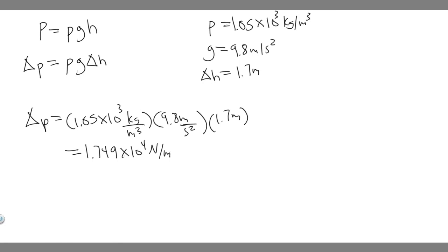But keep in mind what they want us to find it in. They want it in millimeters of mercury. So we have to convert this. And so there's a unit conversion you can use, which essentially 1 mm of mercury is equal to 133 newton over meter squared.